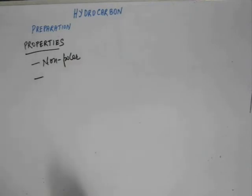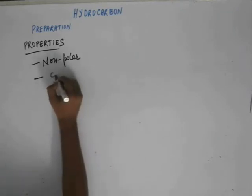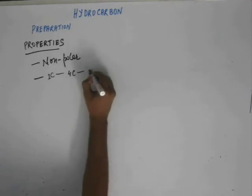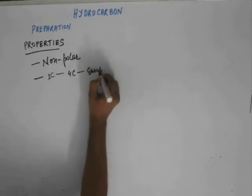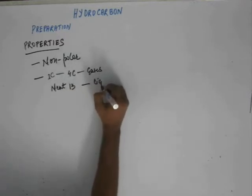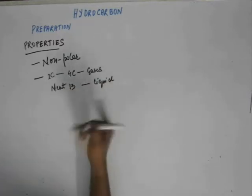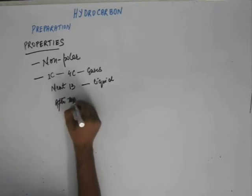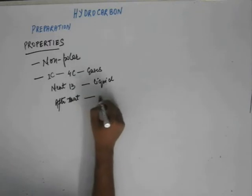So it is nonpolar and after that you must know that lower alkanes, from alkanes having one carbon to four carbon, that means from methane to butane are gases and the next thirteen are liquid. And after that, that means fourteen onwards they are solid.